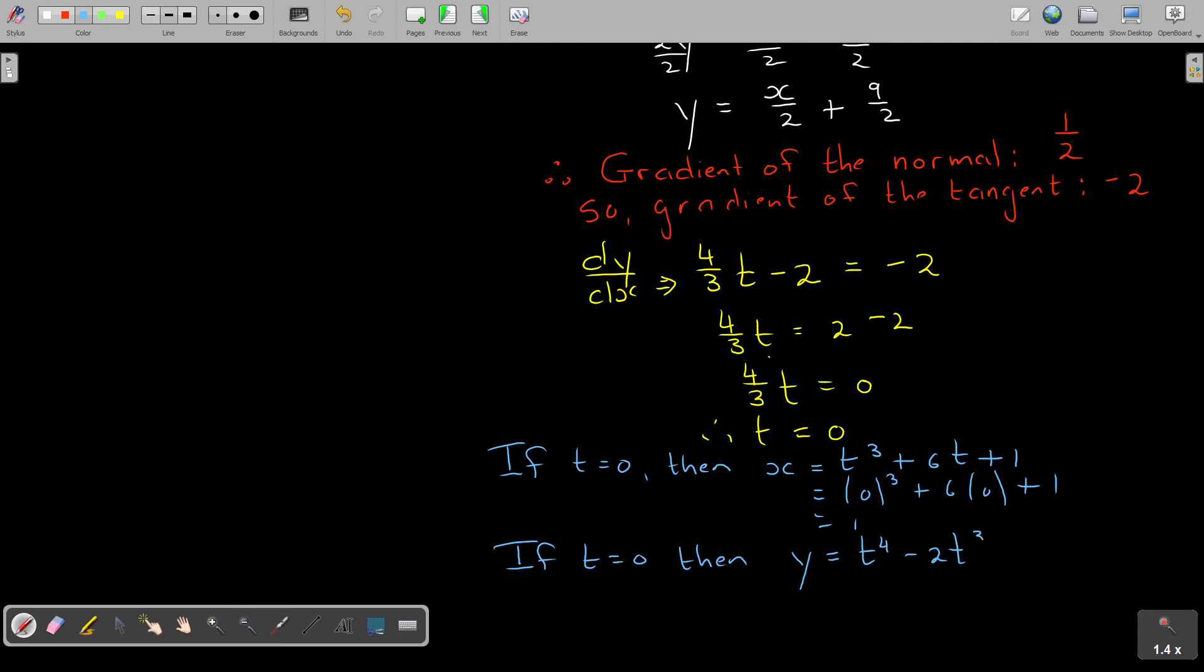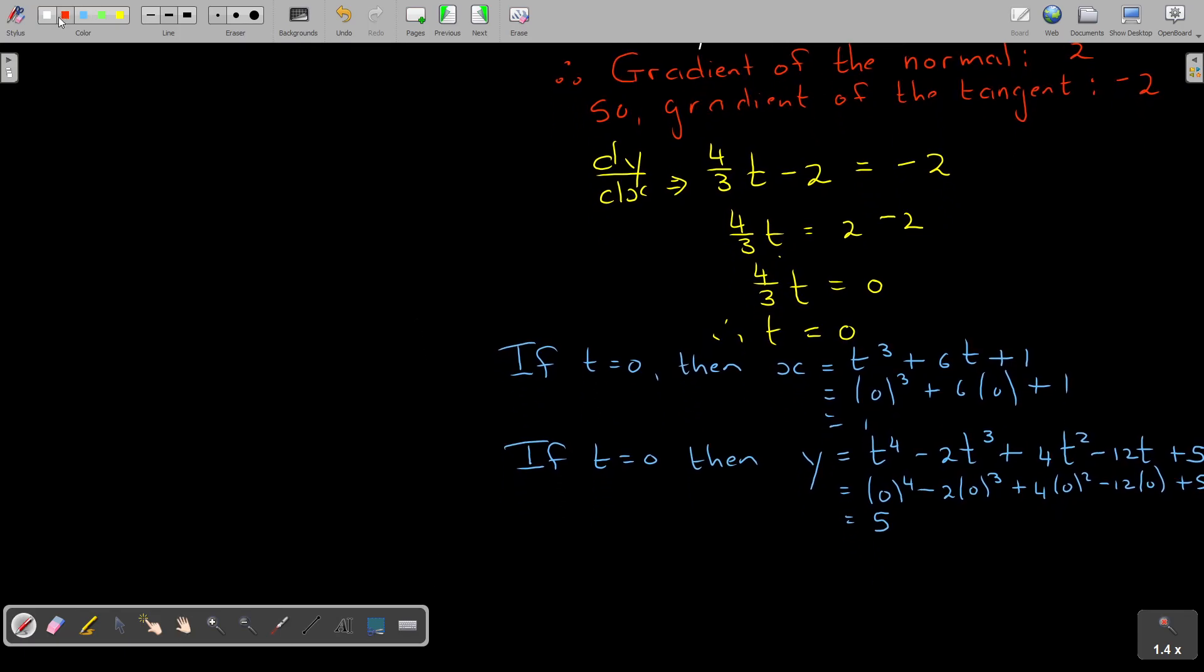And what is my original equation? So if t equals 0, then x equals t to the power 3 plus 6t plus 1. I'm just substituting that 1 and I get 1. Now, if I continue that, I say if t equals 0, then y equals that original formula. And everything becomes 0 except the constant here, 5. So therefore, coordinate of p is 1 by 5, and that's how you do it.